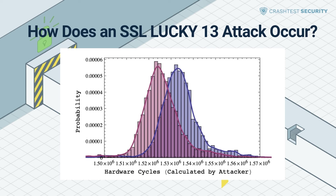Moreover, patches for TLS and DTLS libraries and CBC platforms that address this vulnerability have been developed and are widely available. This includes patches for OpenSSL, NSS, NewTLS, PolarSSL, USSL, MatrixSSL, Opera, BouncyCastle, and Java SE.